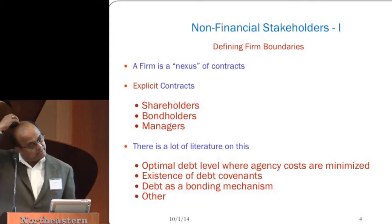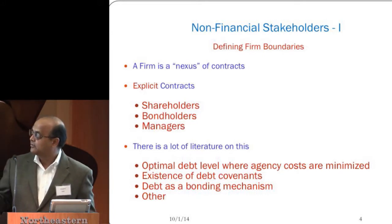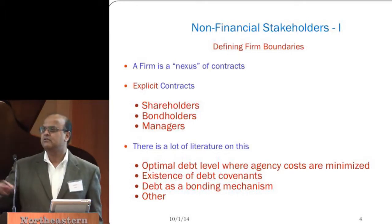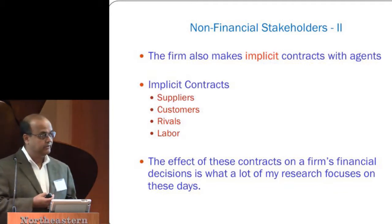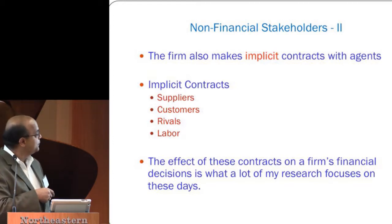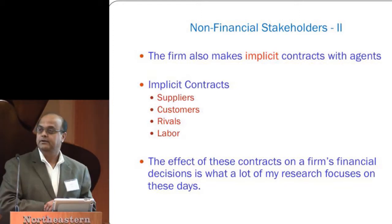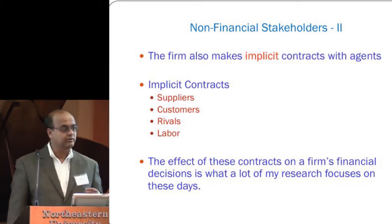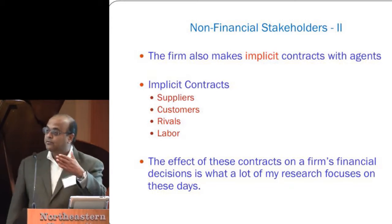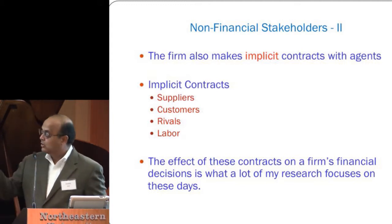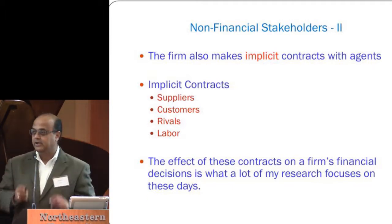In the past, a firm was defined as a nexus of contracts — mostly explicit contracts with shareholders, bondholders, and managers, and there's a bunch of literature on this. What I do now is bring into play implicit contracts — the kind you might have with suppliers or customers. To give an example: suppose Apple introduces a new iPad. There's no explicit contract, but implicitly Apple is telling you that down the road you'll have software or apps that can be used with it. That would be an implicit contract. I look at the importance of these implicit contracts and how a firm's financial decisions and, to some extent, asset pricing are affected.